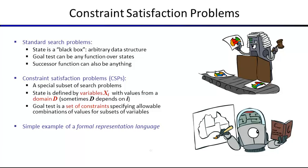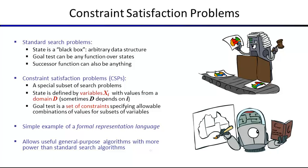This is the first example of a formal representation language. If you capture a real-world problem in this language — specifying variables, domains for the variables, and constraints on the values — then you have a CSP. You could solve it with the search algorithms from previous lectures, but those don't exploit the structure that the goal test consists of many smaller tests, making them very slow in practice.